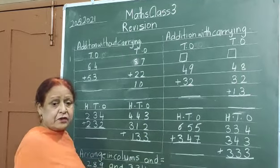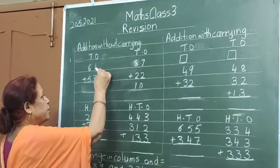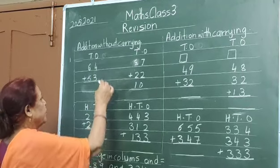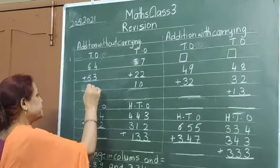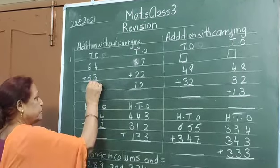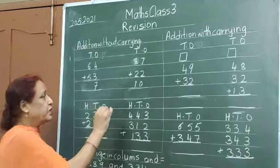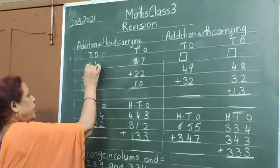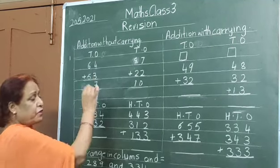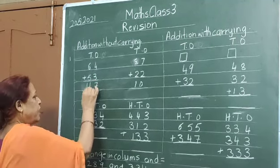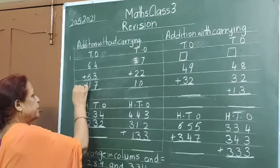Let's do it. Addition in 2-digit number. 4 plus 3 is 7. This is simple addition. And 6 plus 5? 11.